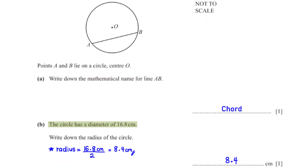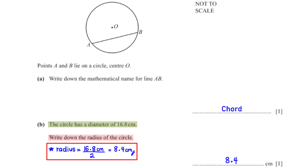The circle has a diameter of 16.8 centimeters. Write down the radius of the circle. The radius is half of the diameter, so in this case the radius is 16.8 centimeters divided by 2, which is equal to 8.4 centimeters.